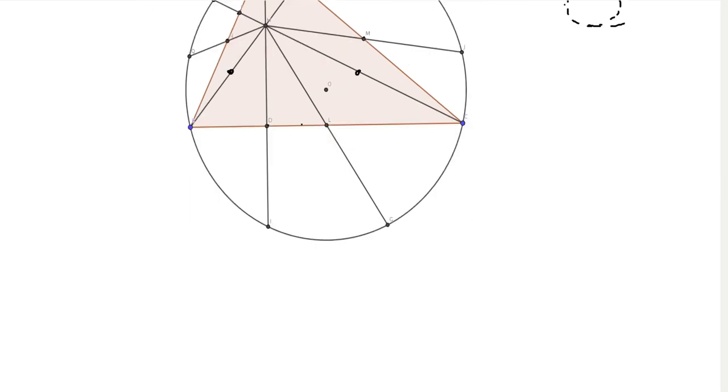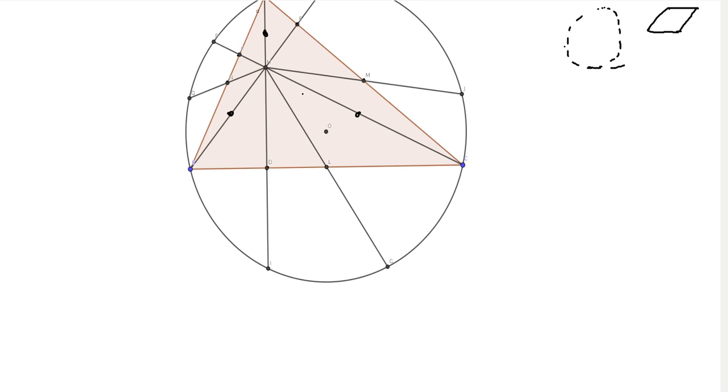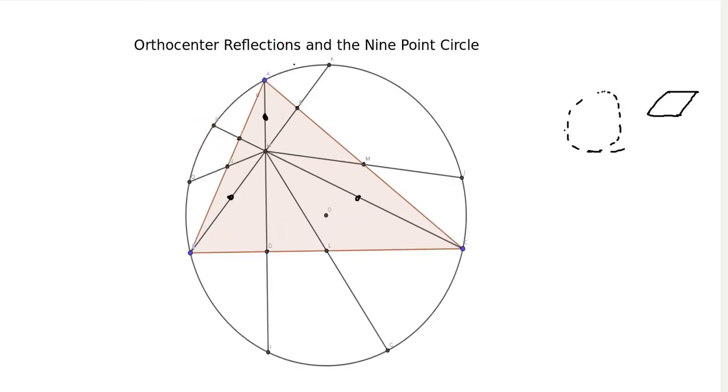So we have to start with a little lemma, as most complicated proofs do. And that is, if we take this orthocenter and we reflect it over either the side of the triangle or the midpoint of the side of a triangle. Both of these hold. If you reflect it over the side or you reflect it over the midpoint, then the reflection will land on the circumcircle of ABC.